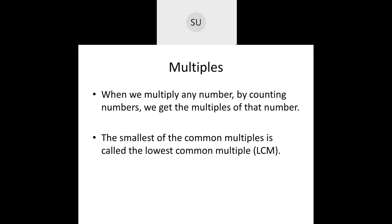The smallest of the common multiples is called the lowest common multiple. When they give you two numbers and tell you to write the multiples for both, sometimes there are common multiples in both lists. Among those common multiples, the smallest one will be the lowest common multiple or LCM. We will see it with an example later.